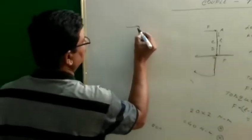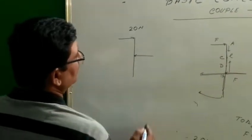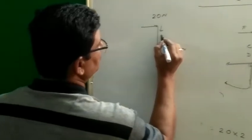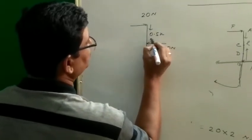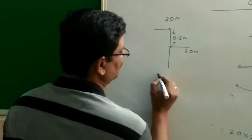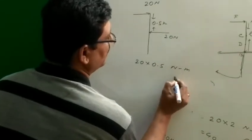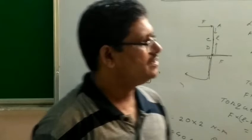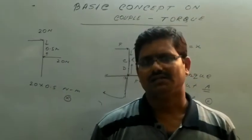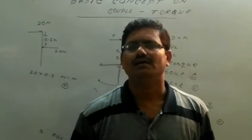Here a force of 20 Newton is acting, and another force of 20 Newton is acting in the opposite direction. The distance between them is 0.5 meter. The torque by this couple will be 20 into 0.5, which equals 10 Newton-meter, in the inward normal direction. You can conclude that if a couple is acting on a body, the torque will be the same for any point along the length of the body.